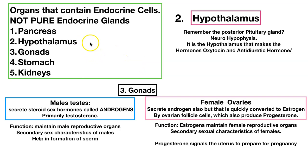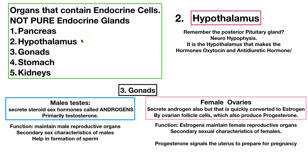Next on our list of organs containing endocrine cells is the hypothalamus, which we've already looked at. You must remember it is the hypothalamus that makes the hormones oxytocin and antidiuretic hormone, sending them down into the posterior pituitary gland — but it is the hypothalamus that is actually making these hormones. The hypothalamus has many other jobs it handles in the brain as well.